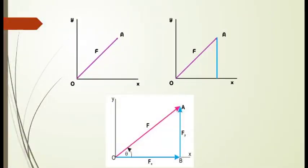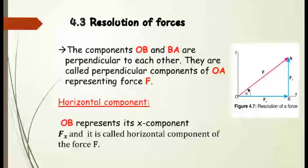Step by step in the figure: first we draw vector force F, then draw a perpendicular in blue. After drawing the perpendicular, we join heads with tails according to the head-to-tail rule, forming a right angle triangle. Components OB and BA are perpendicular to each other, so they are called perpendicular components of OA, which is the resultant of force F.